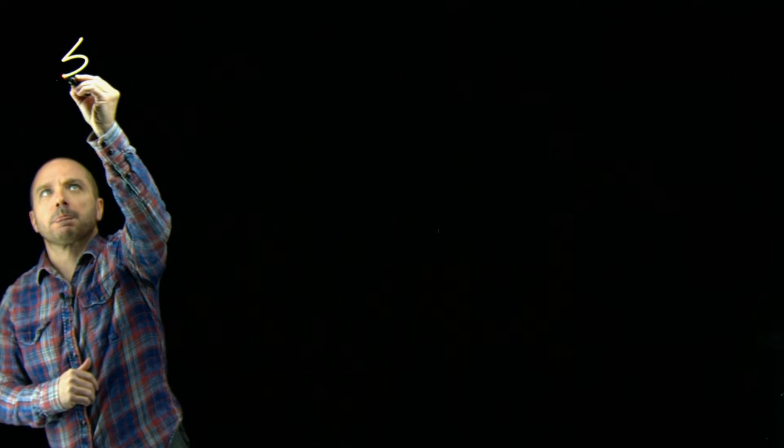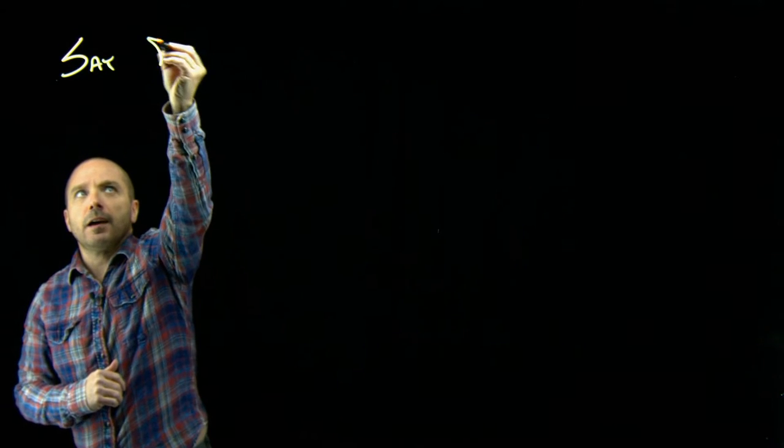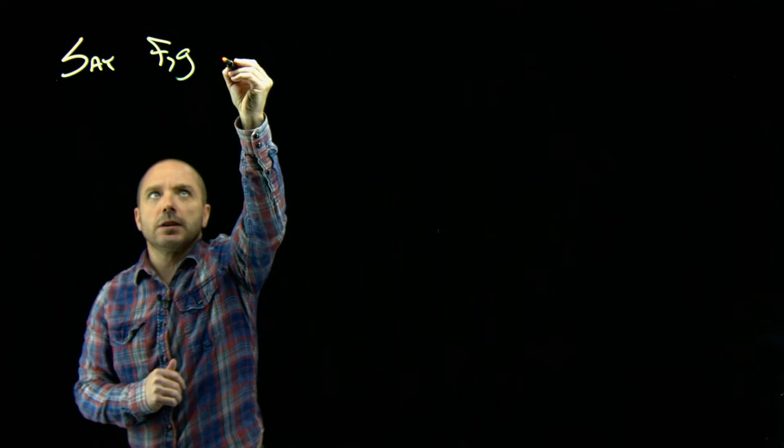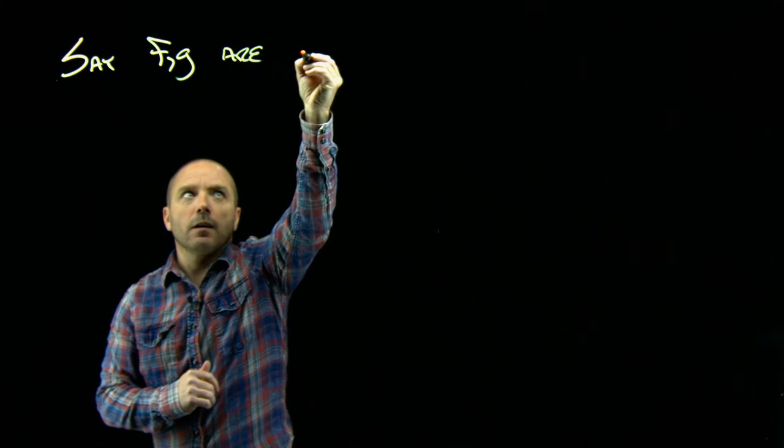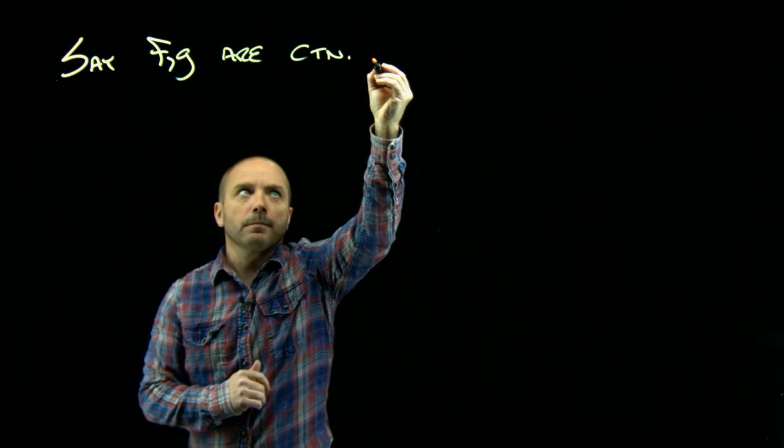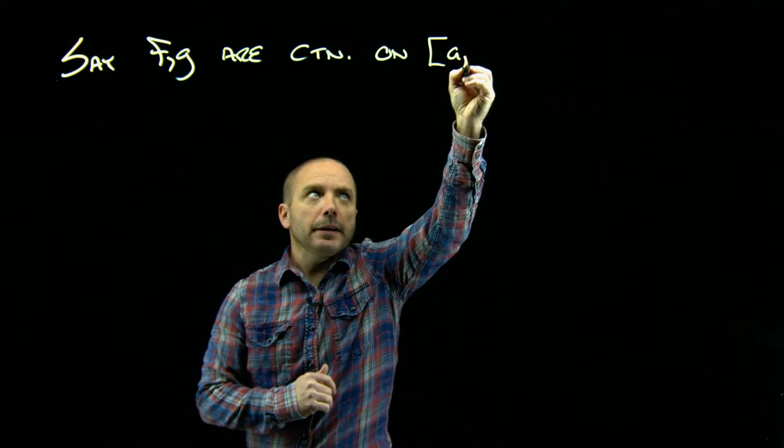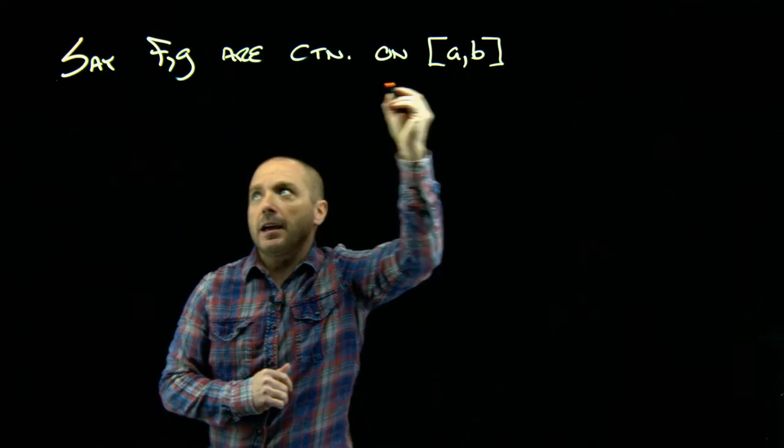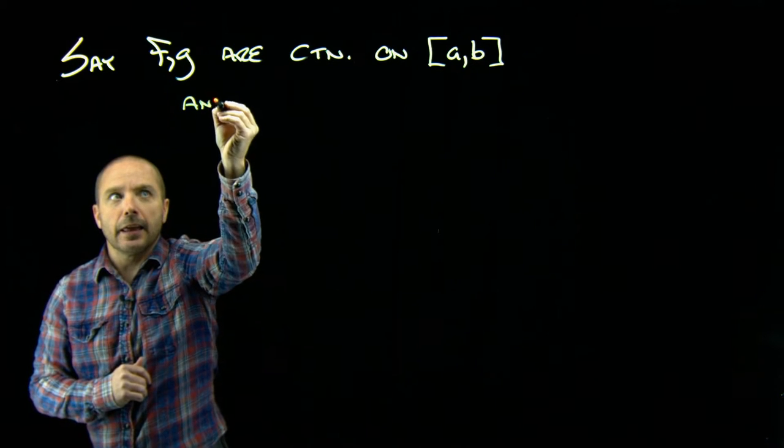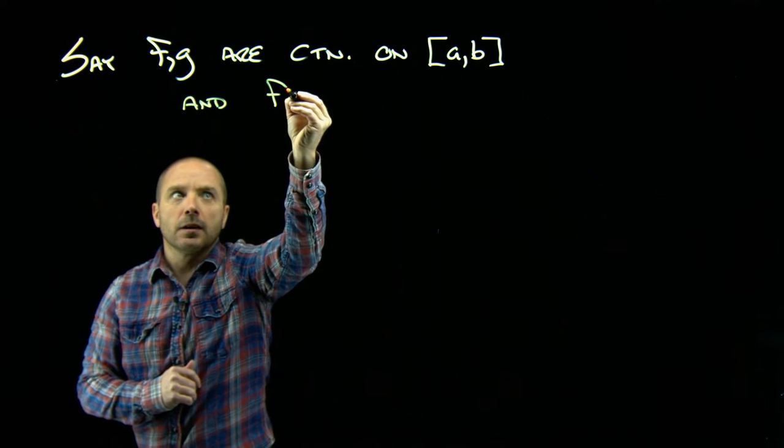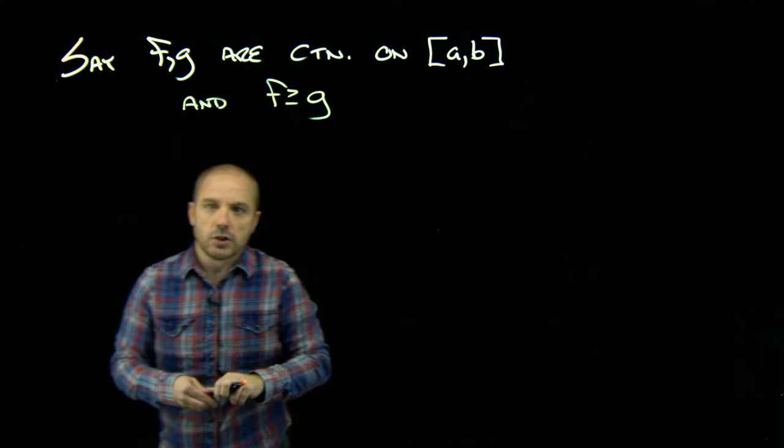So starting off, let's say f and g are continuous on an interval from a to b, and let's say that f is always greater than or equal to g.